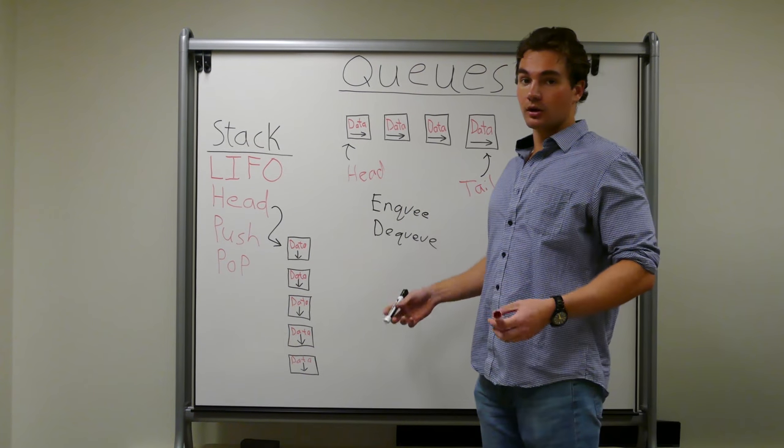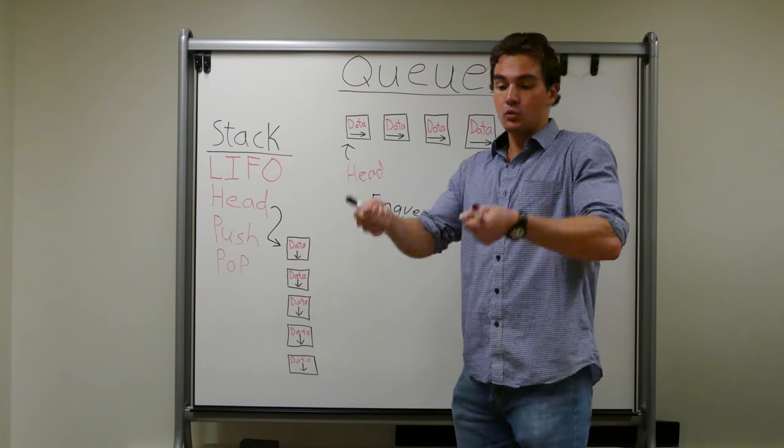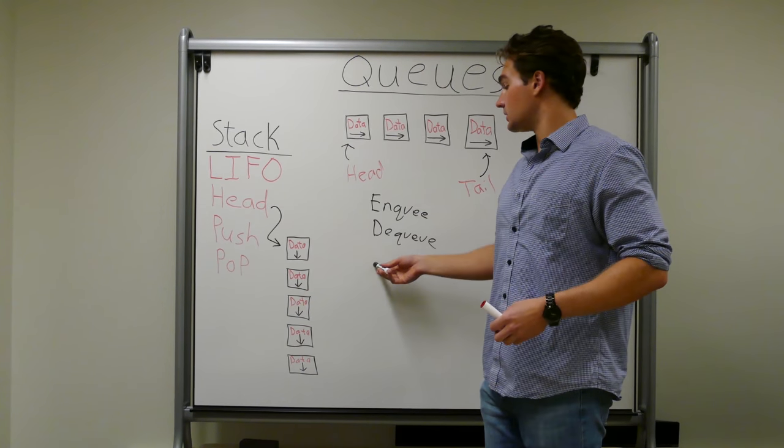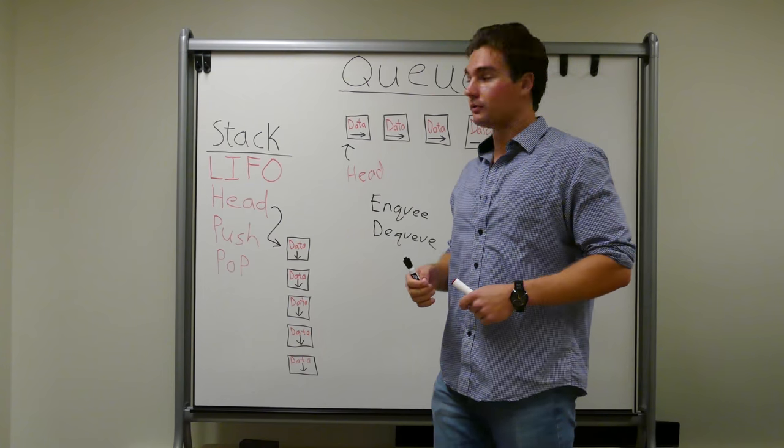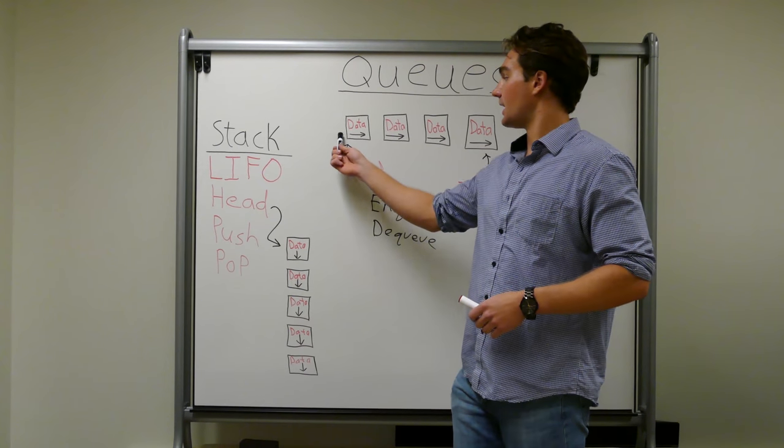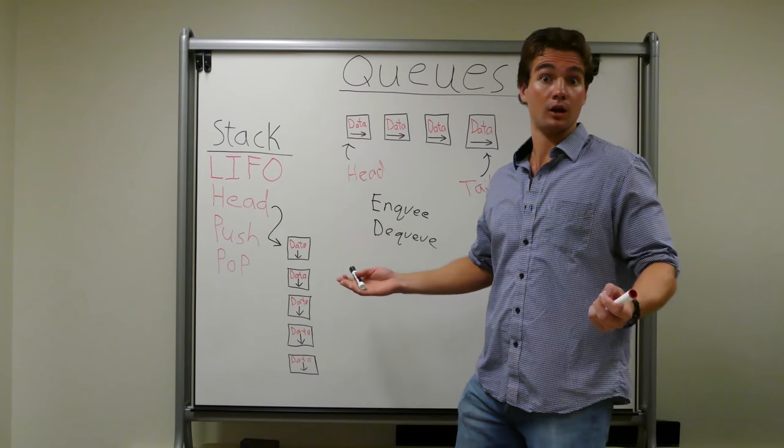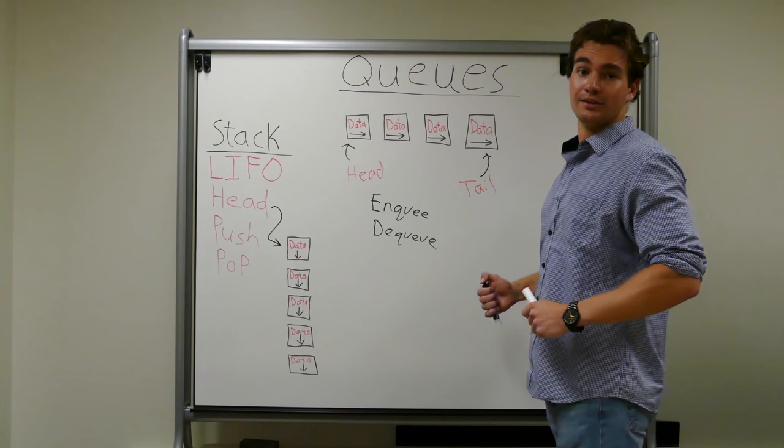Pop and dequeue are also similar. Pop, you remove a node from the top of the stack, where dequeue is you remove a node from the front of the line. So the head node gets to go get their car washed. If you were dealing with data, that was of type car.